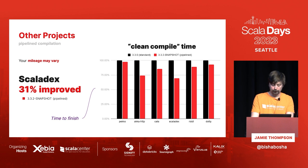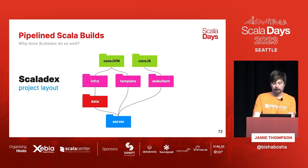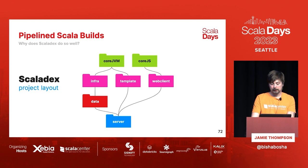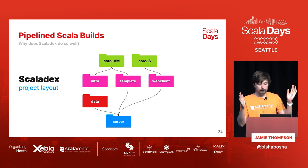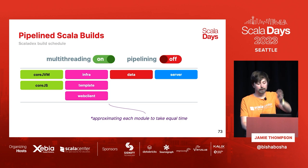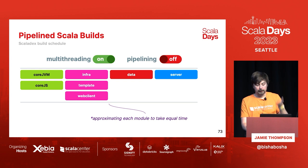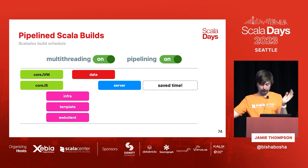ScalaDex has the best of both worlds in its project layout: it maximizes parallelism but also has several layers of dependencies. In a perfect scenario where every project takes the same time to build, theoretically turning on pipelining gives a significant speedup, and every additional level of dependency increases the saved time.